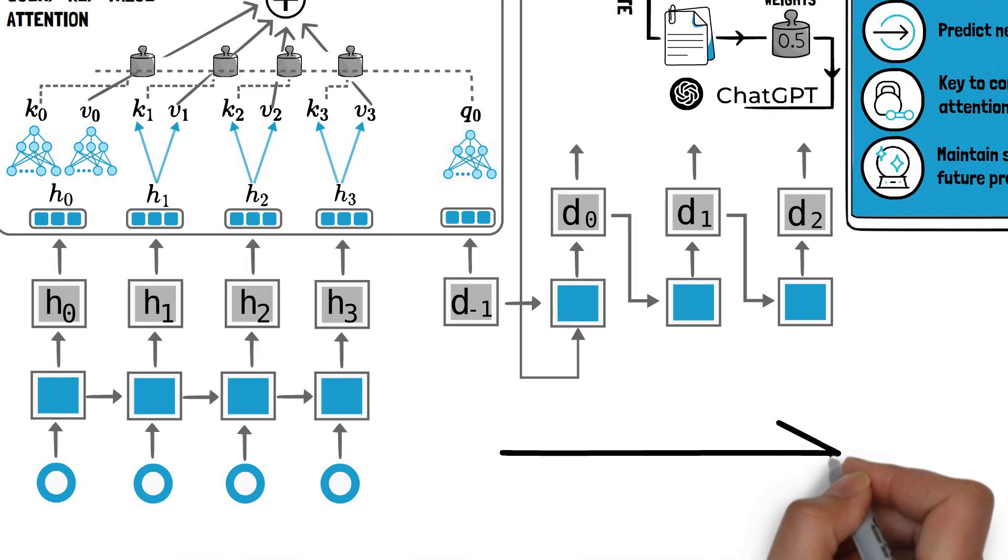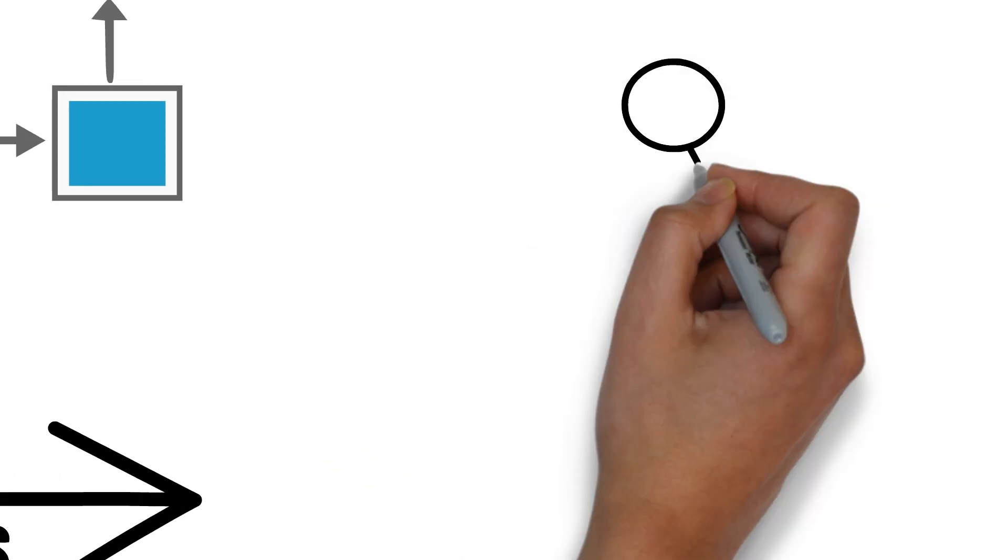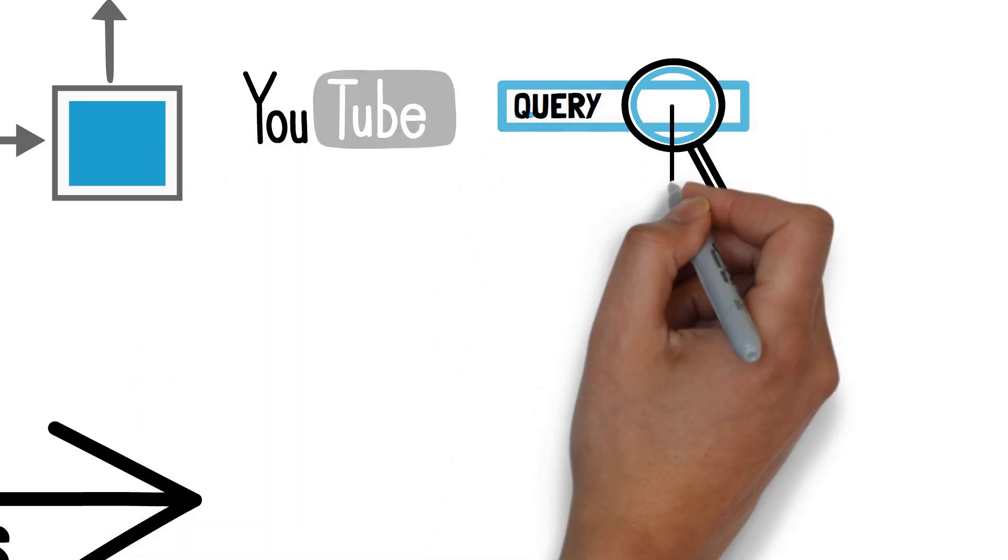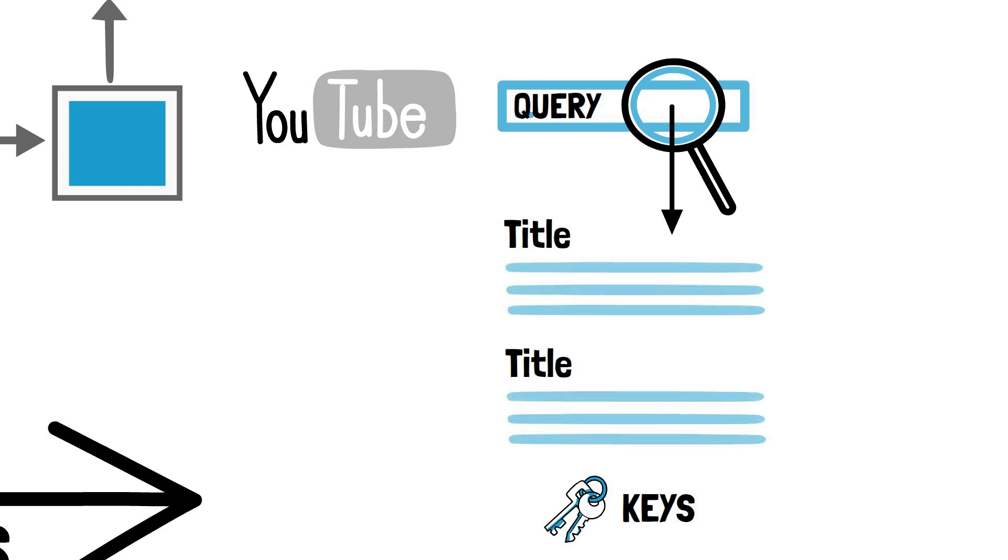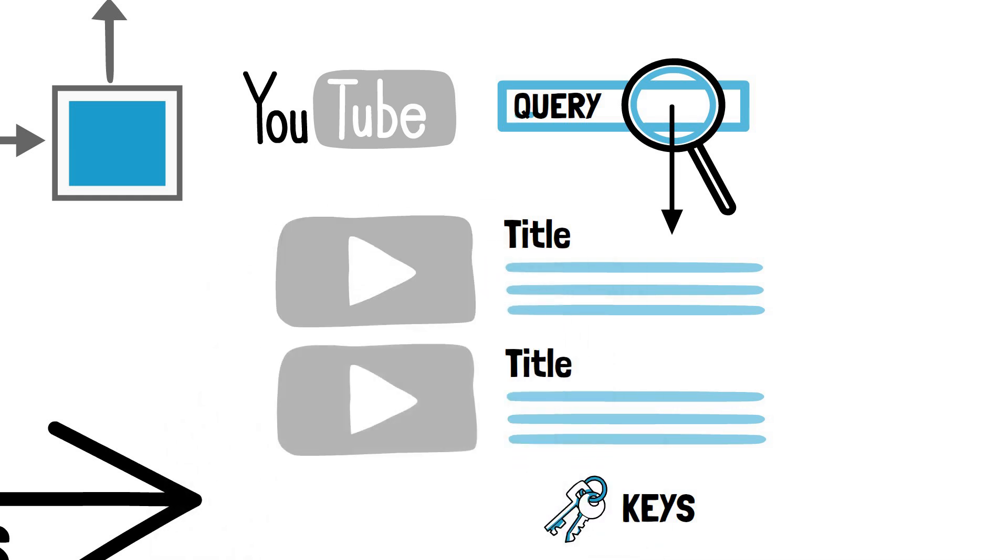The key value query concept is analogous to retrieval systems. For example, when you search for videos on YouTube, the search engine will map your query against a set of keys, video title, description, and so on, which are associated with all the candidate videos in their database. Then it will present you the best matched videos, which are the values.